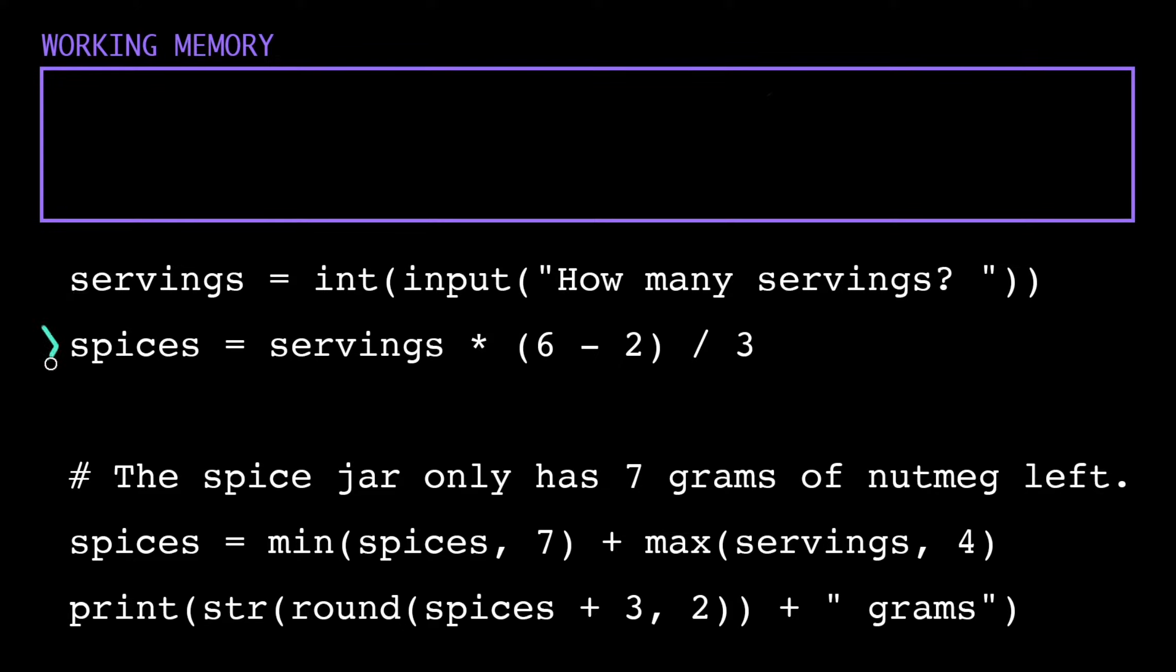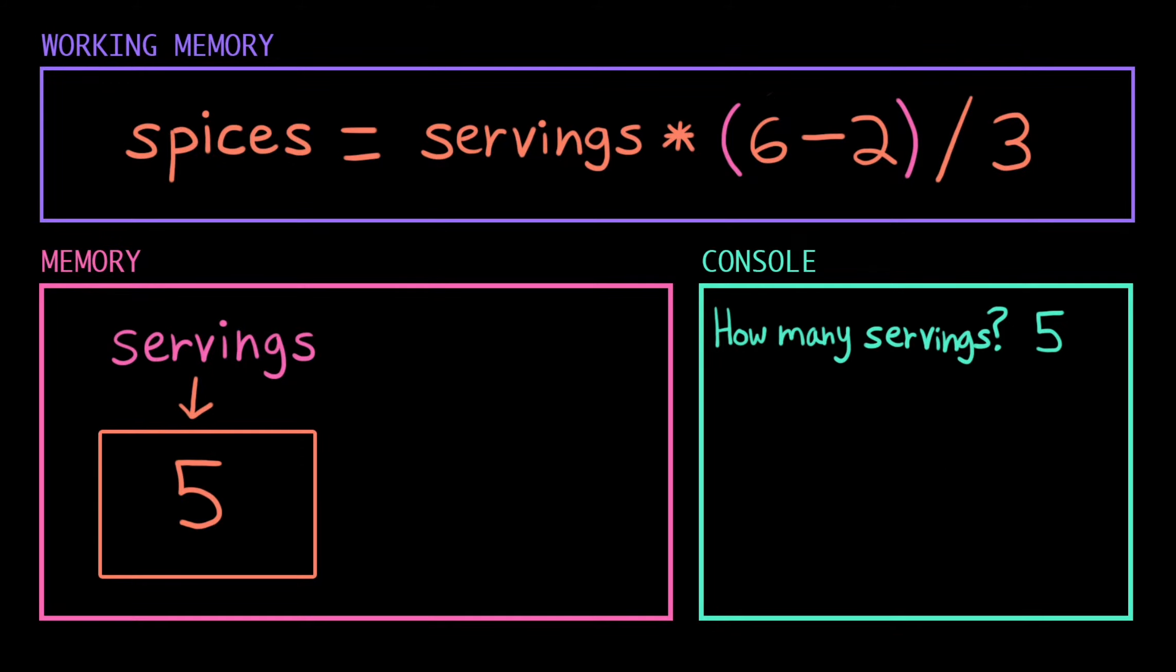OK, we load the second instruction into working memory. Looks like we're just doing some math here. We follow PEMDAS, or GEMDAS: that's parentheses, exponents, then multiplication and division, and then addition and subtraction. So we've got parentheses first, the computer evaluates 6 minus 2. Then we're left with only multiplication and division operators, which are at the same level of precedence, so the computer just evaluates left to right.